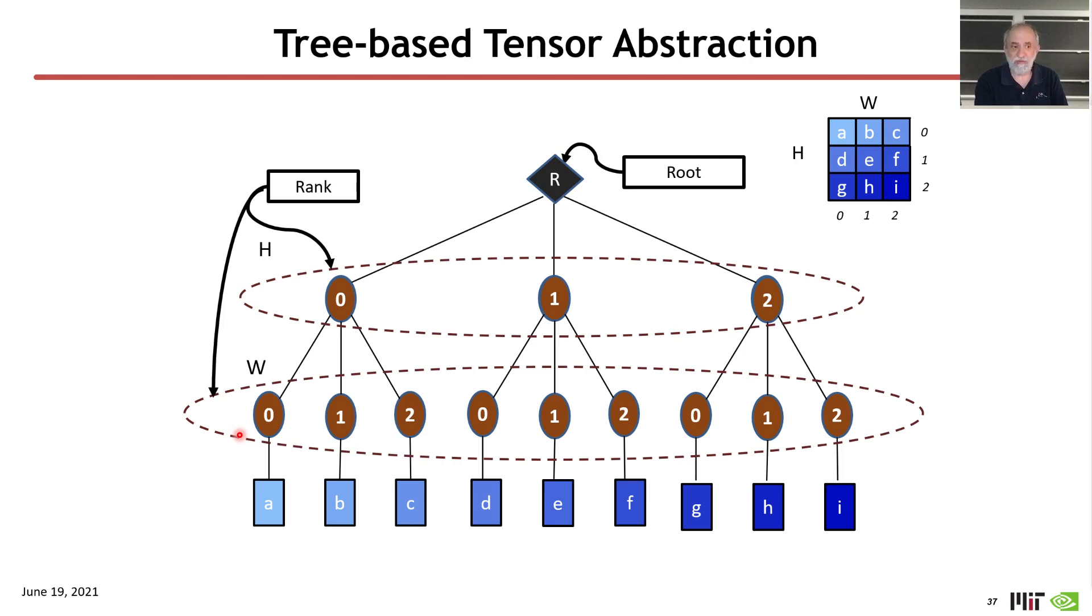Notice here that the order of the ranks—so this is the root of the tree, and these are the two ranks of the tree. Notice that even in our abstraction, the order of the ranks do manifest themselves in the way we want to think about the tensor. The coordinates are shown as elements in each of the ranks. And finally, at the leaves of the tree are the values in the tensor. I use a dashed oval to represent a level and all of the elements in a level or rank of the tensor.